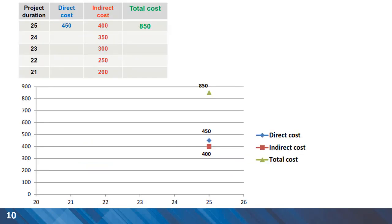We can also plot the normal situation for the project with the indirect cost of 400 which is given to us in this table in the red font. Indirect cost and also the total cost of the project.